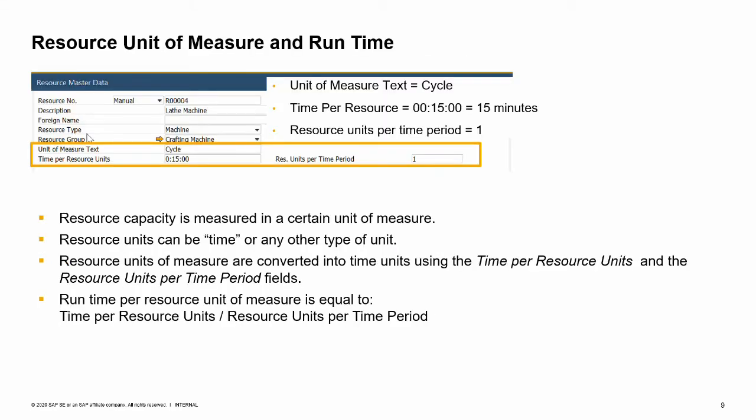The capacity of a resource is measured in the resource unit of measure. This unit can be time-based, such as hours or minutes, or any other type such as cycle or turn. This resource unit is used during planning and consumption of capacity in bills of materials and production orders, including related transactions such as issue for production. To translate resource consumption into time, we define the time per resource units and units per time period fields. The run time of a single unit of resource equals the time per resource units divided by the resource units per time period.